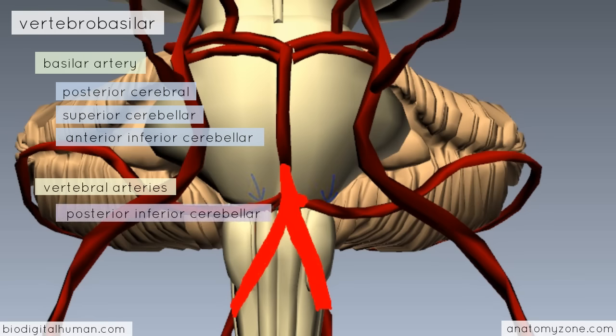We have looked at the anterior circulation originating from the internal carotid artery and the posterior circulation originating from the vertebrobasilar system. There is communication between both circulations via the posterior communicating artery, highlighted in green, which connects the internal carotid to the posterior cerebral artery, outlined in yellow. That is the arterial circle of Willis.